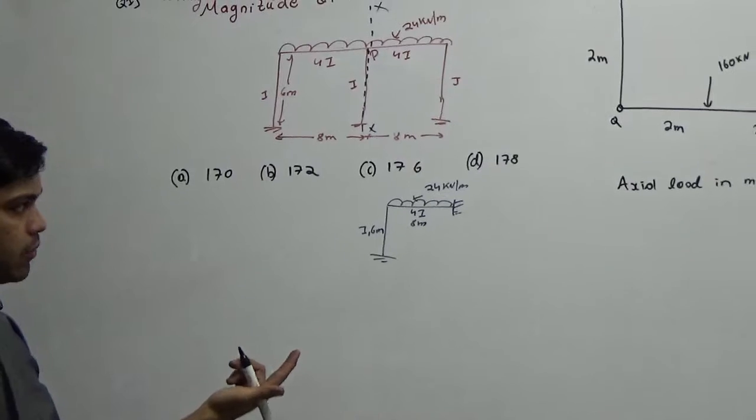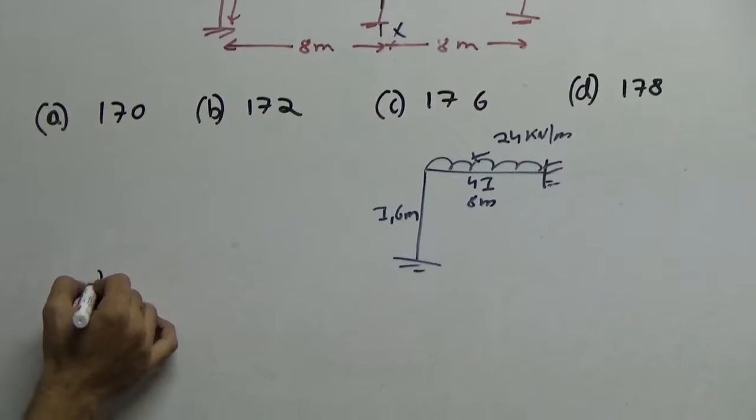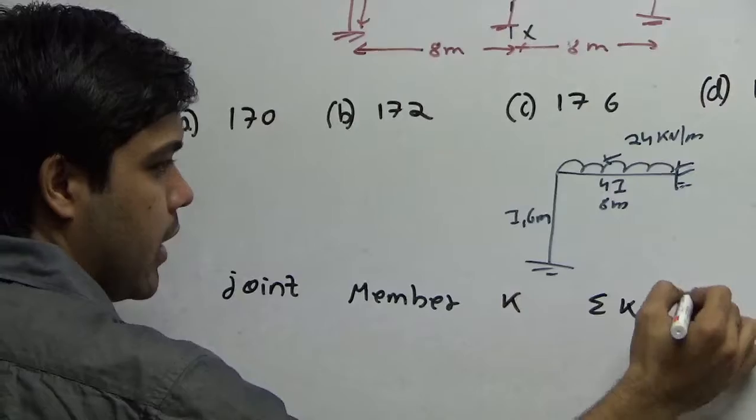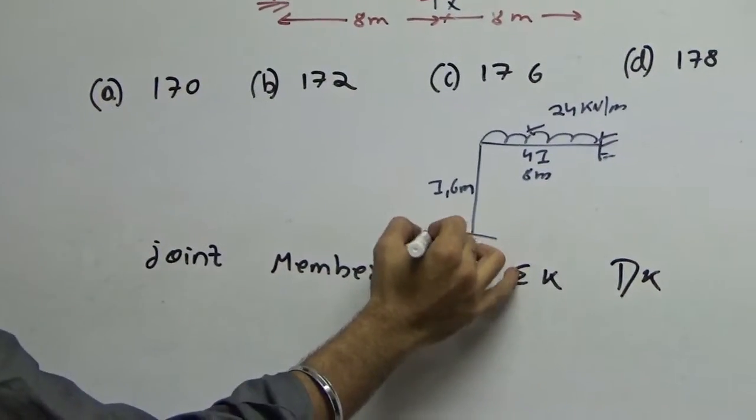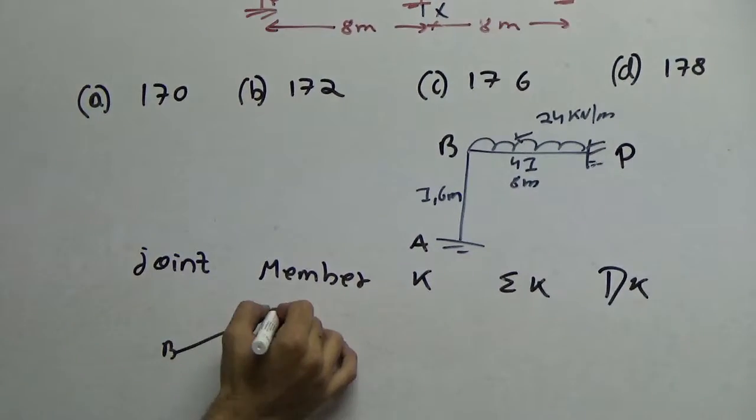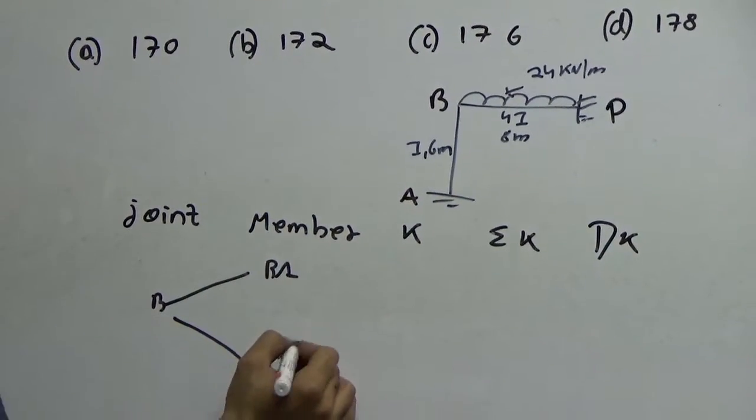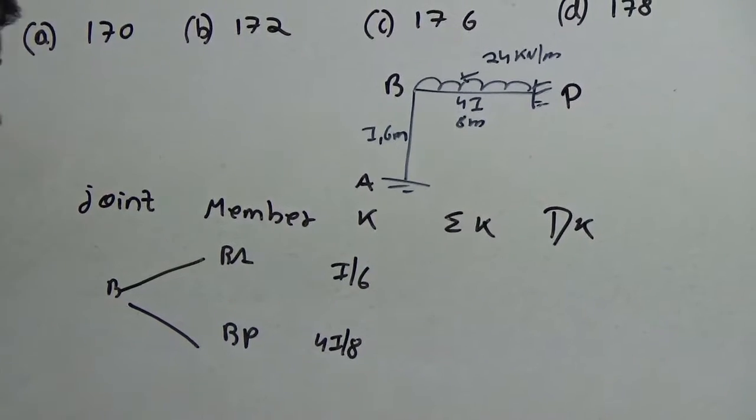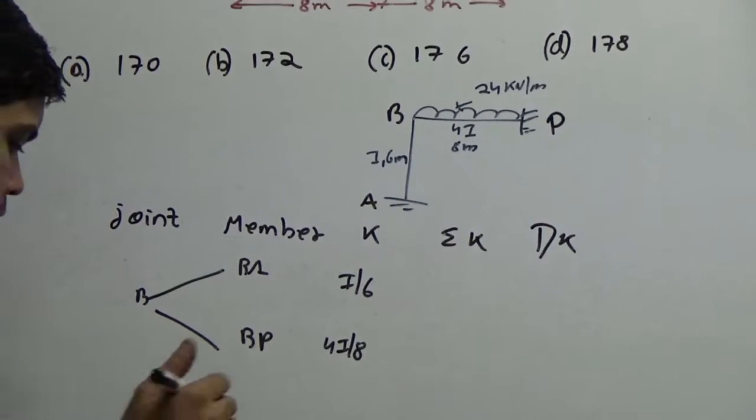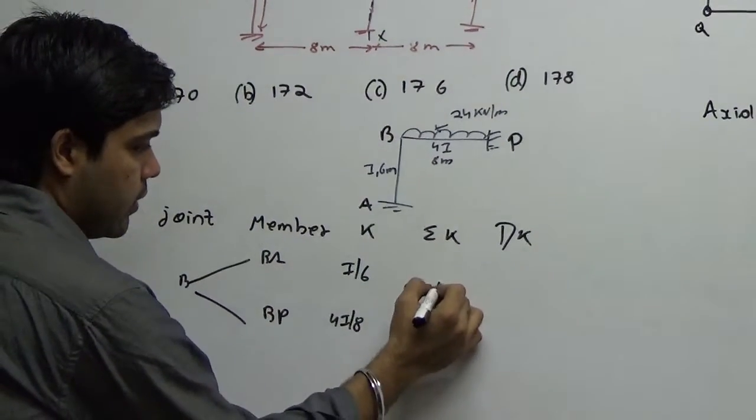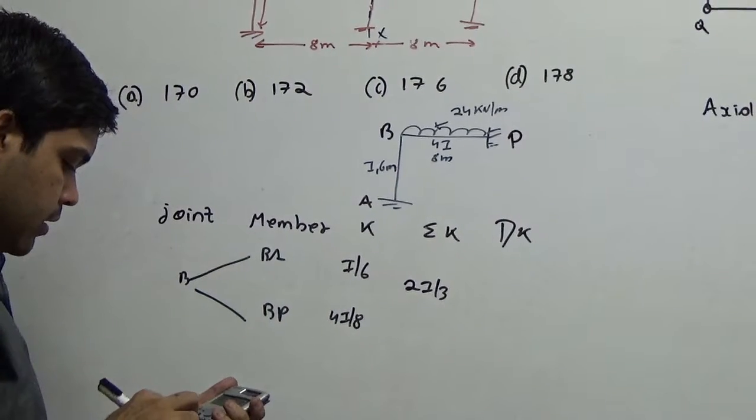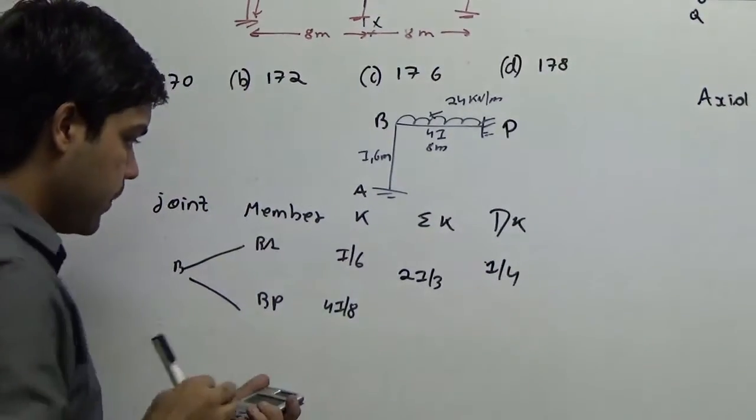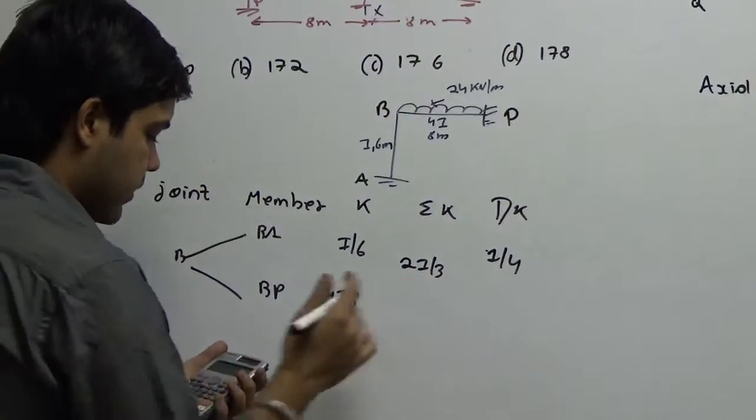Now for this problem, the first in moment distribution is the distribution factors. So joint, member, stiffness, sum of stiffness and distribution factor. I have this joint as A, B and let this be P. Now the joint B is BA and BP. What is the stiffness for this? i by 6. What is the stiffness for this? 4i by 8. So what is the sum of the stiffness? 1 by 6 plus 1 by 2. You have 2i by 3.